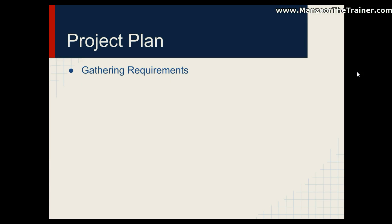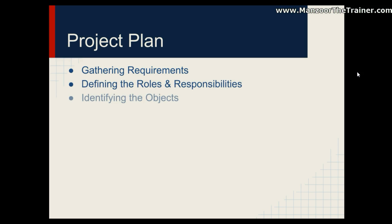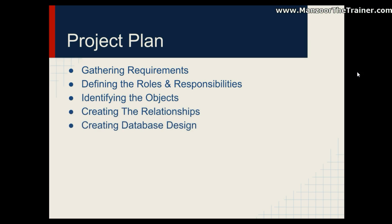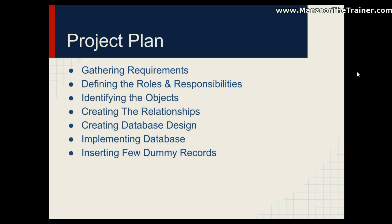Next, we will see how to define roles and responsibilities from the requirements, and we will see how to identify the objects — like breaking the requirement into objects. Then we will see how to create the relationships between all the objects. Then we will go for designing the database, implementing the database, and inserting a few dummy records so that our backend is ready.